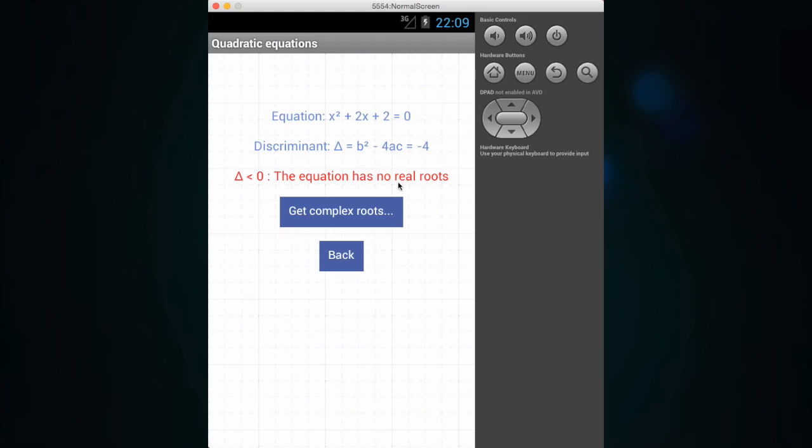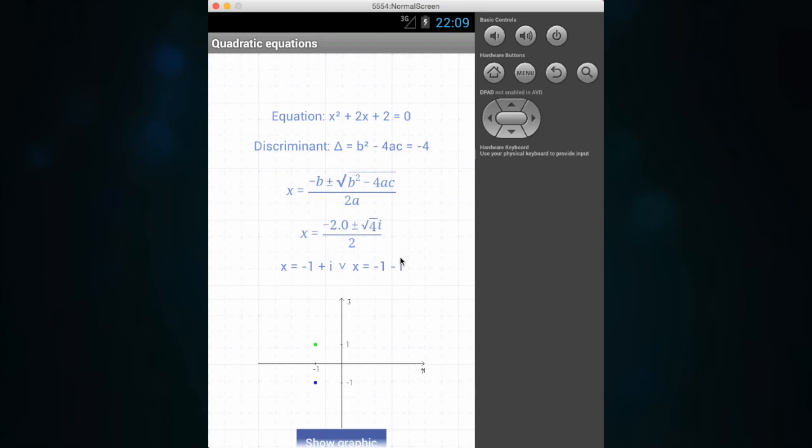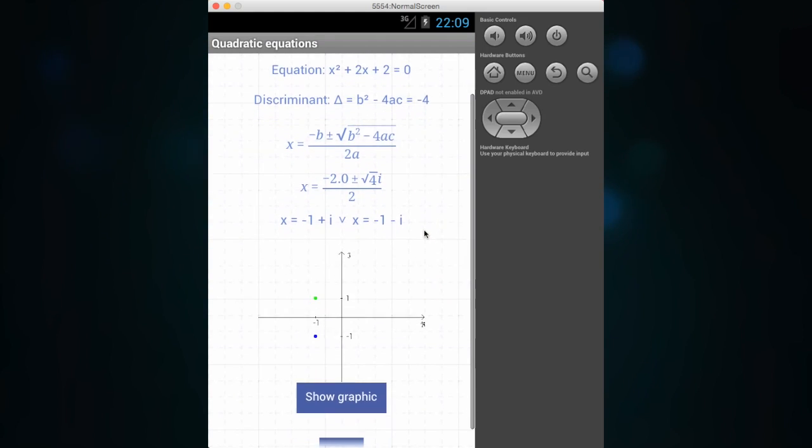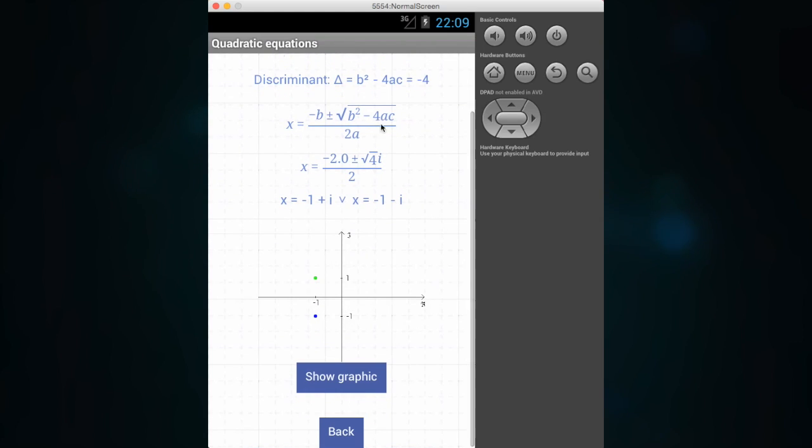In this case, again using the quadratic formula, we will have here a replacement. So minus 4 will be just square root of 4i, since the square root of i is minus 1. So we have here the complex solution.